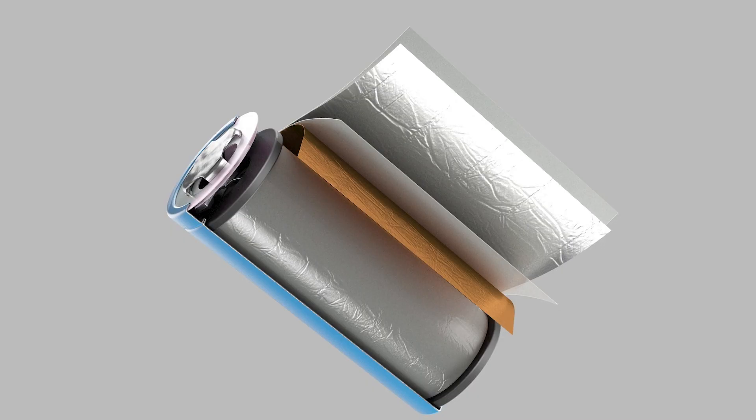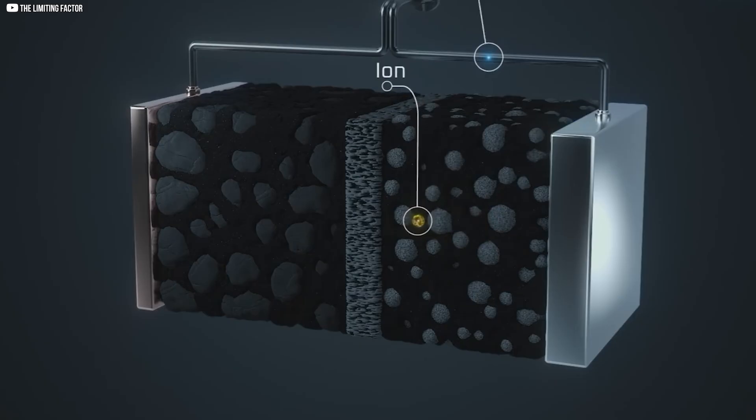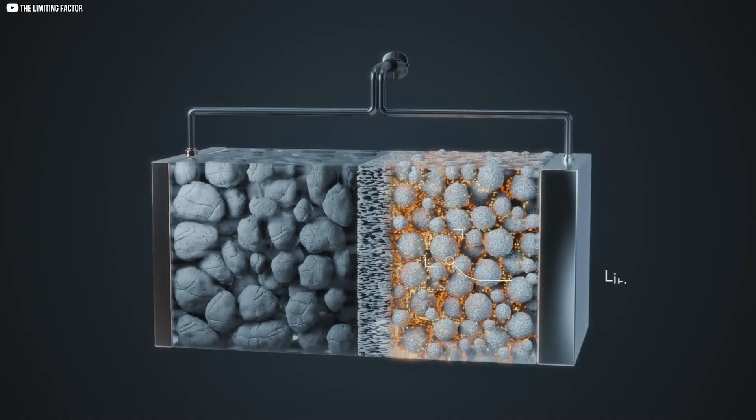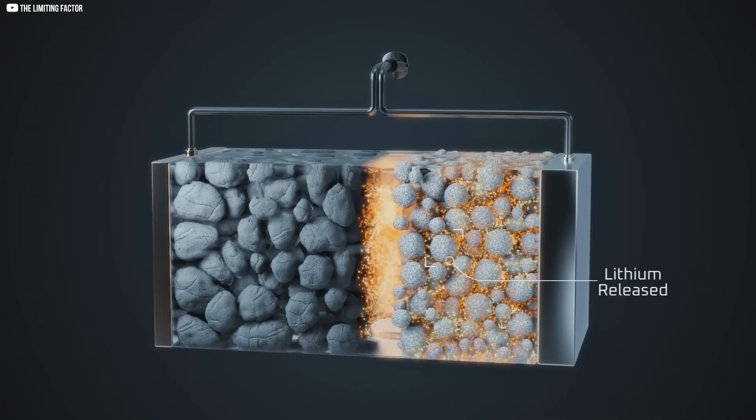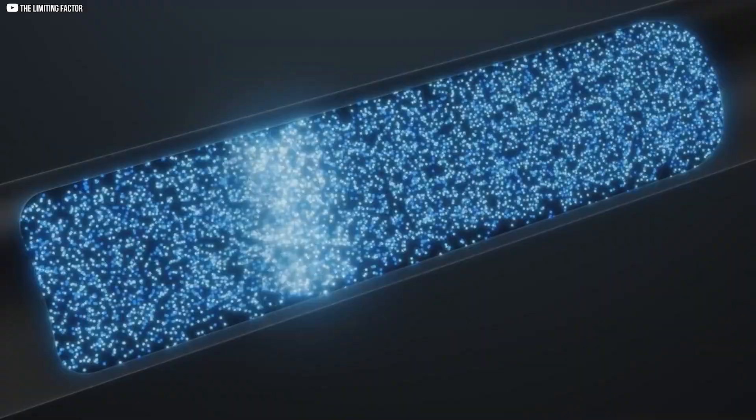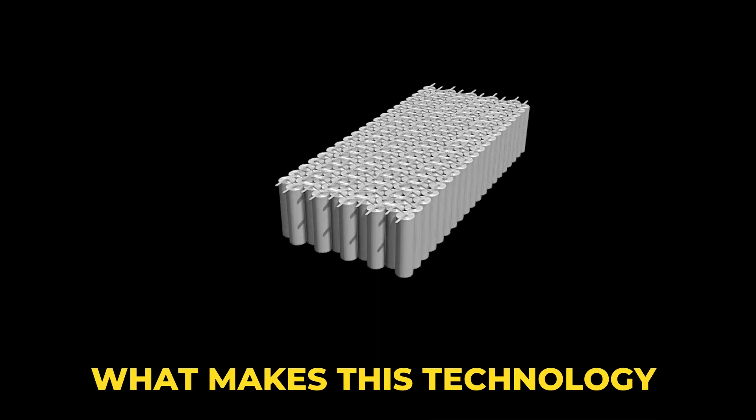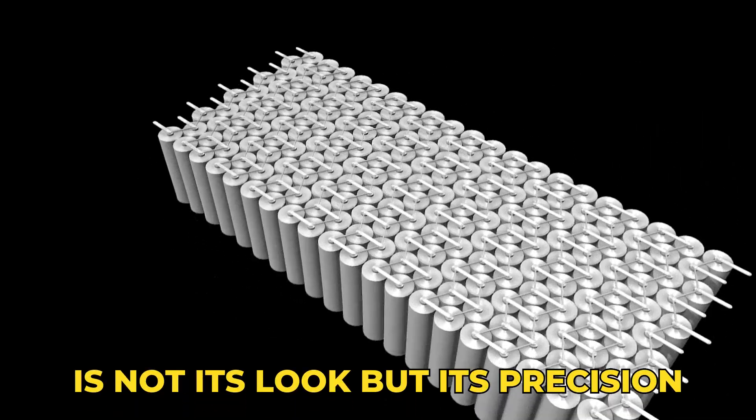Each layer plays a role. One gives up electrons. Another receives them. And between them, an electrolyte carries ions. The harmony is delicate. If the balance holds, the current flows smoothly. If it breaks, failure follows. What makes this technology remarkable is not its look, but its precision.